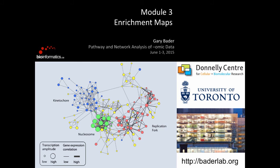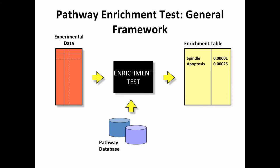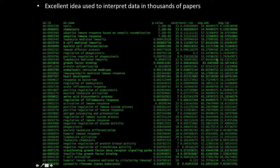This is the topic that we really want to get to, and it uses Cytoscape. We learned this morning that enrichment analysis generally works like this: you have your experimental data - gene expression values that are sorted - and a pathway database like gene ontology. Then you have your enrichment test that finds which pathways are enriched in your sample. You get a table with pathways like spindle and apoptosis with p-values or q-values. Tens of thousands of papers have used this idea.